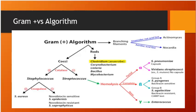Corynebacterium diphtheriae forms a grayish-white membrane in the throat; its incidence is reduced due to immunization. Listeria monocytogenes is one of the bacteria causing meningitis in less than 2 years and more than 50 years of age — therefore, along with ceftriaxone we add ampicillin to cover for Listeria in the very young and very old.